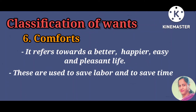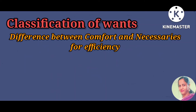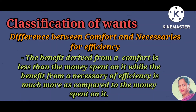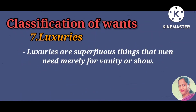After discussing necessaries and comforts, a question arises: what is the difference between comforts and necessaries for efficiency? A benefit derived from a comfort is less than the money spent on it, while the benefit from a necessary for efficiency is much more than the money spent. For example, an electric fan for a college student is a necessary for efficiency as it increases study hours, whereas for a person sleeping in summer it is just a comfort.